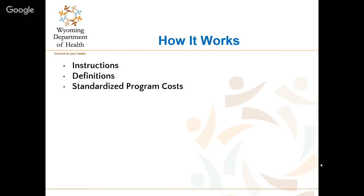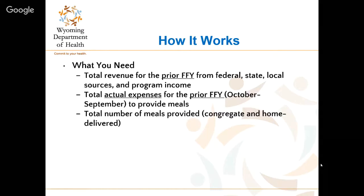Next is a brief review of how it works, going into specific details on instructions and definitions, followed by an example of a program's grant application expenses. What you need: the total revenue for the prior federal fiscal year — this includes federal, state, local sources, program income, and NSUP. Any type of revenue you receive for the nutrition program needs to be included. You also need total actual expenses for the prior federal fiscal year — October 1st through September 30th — which are what you used to provide meals.